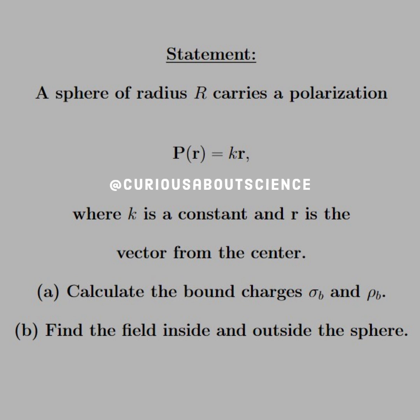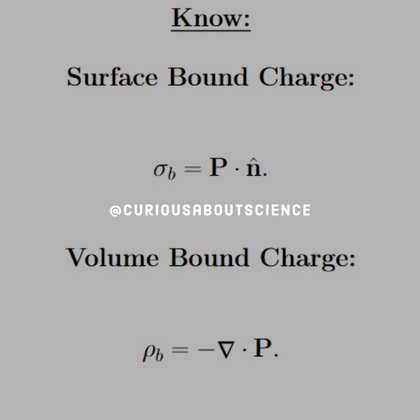Part A: Calculate the bound charges sigma b and rho b. Part B: Find the field inside and outside the sphere. Things to know for this problem: the surface bound charge is sigma b equal to polarization dotted with the normal vector. The volume bound charge is the negative divergence of the polarization.